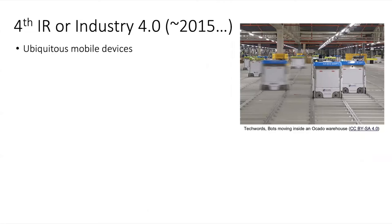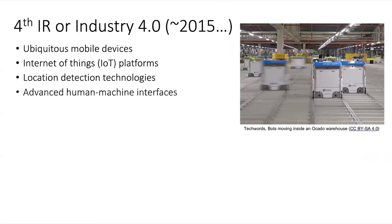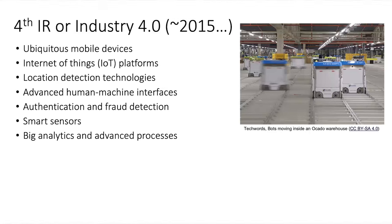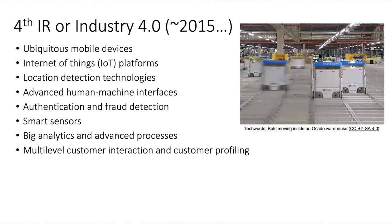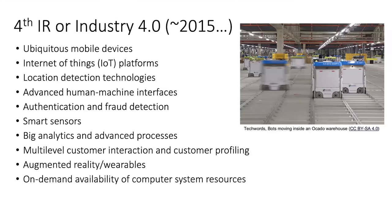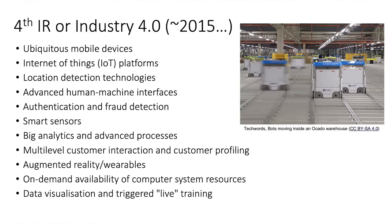The Fourth Industrial Revolution some would say started about 2015 with ubiquitous mobile devices — everybody having a smartphone — the Internet of Things, location detection technologies, advanced human-machine interfaces, authentication and fraud detection, smart sensors, big analytics and advanced processes, multi-level customer interaction, customer profiling, augmented realities and wearables, and on-demand availability of computer systems and resources. We started to see real big visualization and triggered live training using data — this picture is of robots doing the work in a factory.